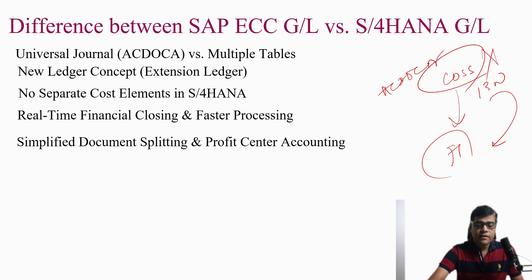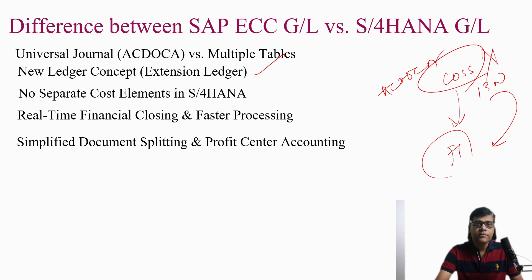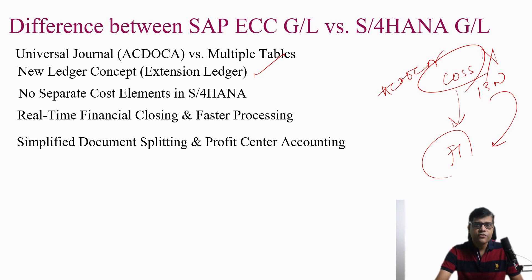Coming to the next point: the new GL ledger concept and extension ledger. Although many companies never used the ledger concept, for those already using the new GL concept in ECC 6, the extension ledger is a new concept in S4 HANA. In ECC we had ledger-specific transactions known as special purpose ledgers; those are replaced in S4 HANA with the extension ledger. The extension ledger reduces the data footprint because it does not generate duplicate data while we are using parallel accounting.